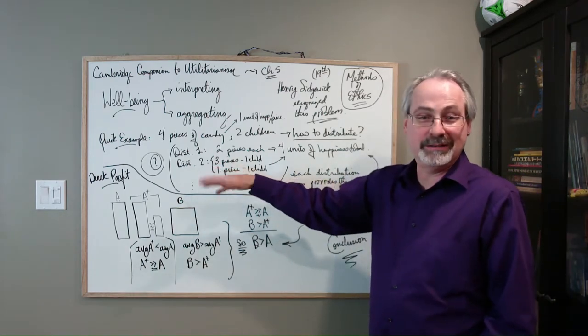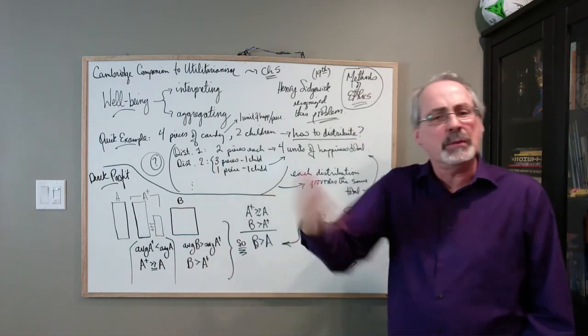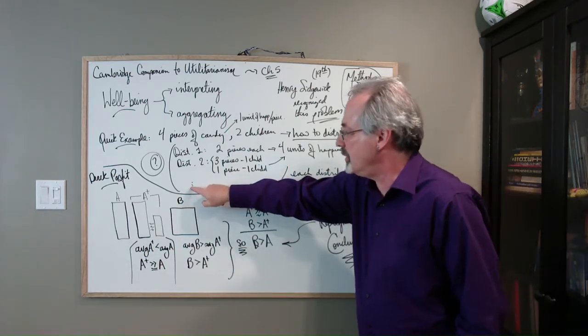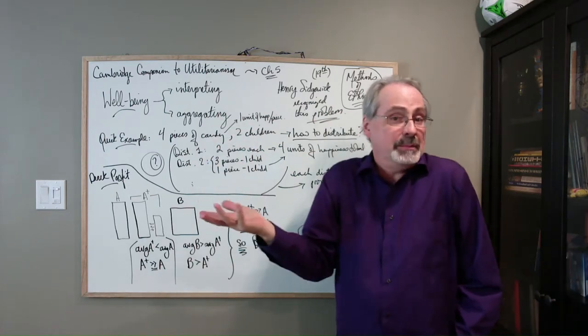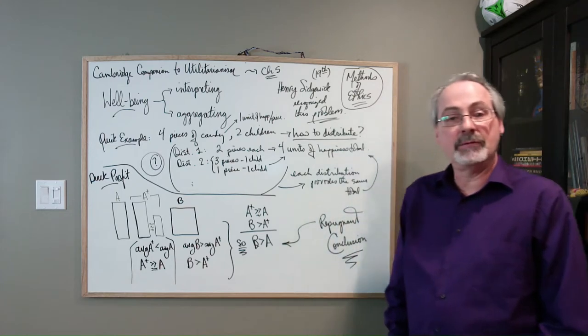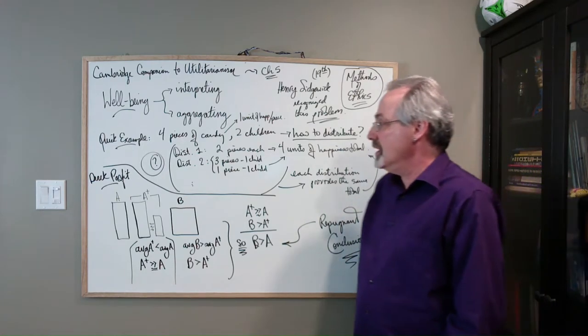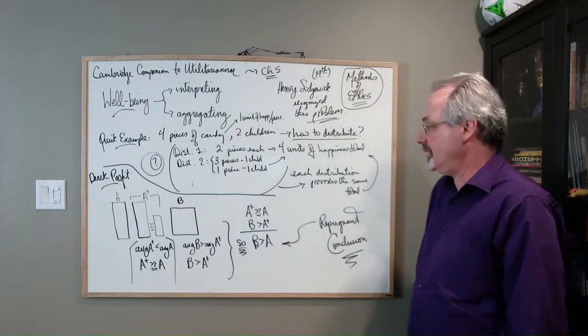Then you could go 3.5 units to one kid and 0.5. There would be, so I put three little dots here. There's possibly infinitely many ways, if you can cut the candy up, you could have all these kinds of distributions of it, all of them preserving this totality. So which one are you going to pick?